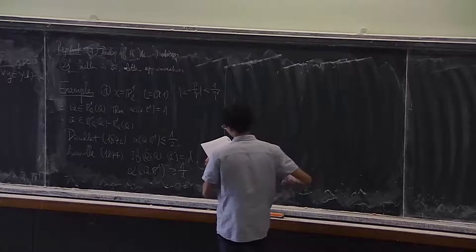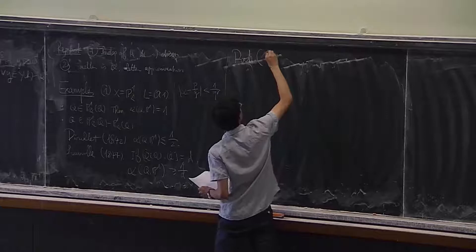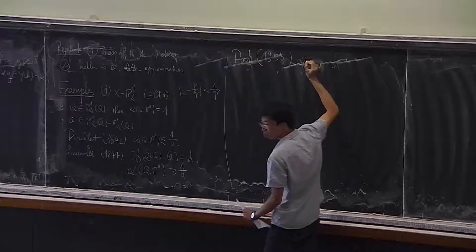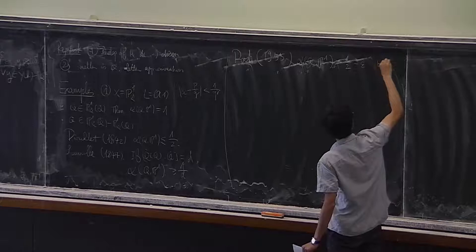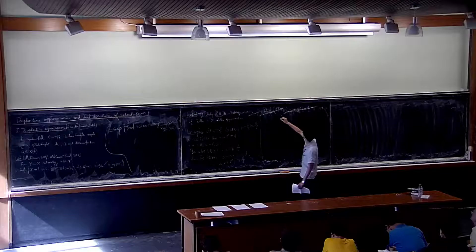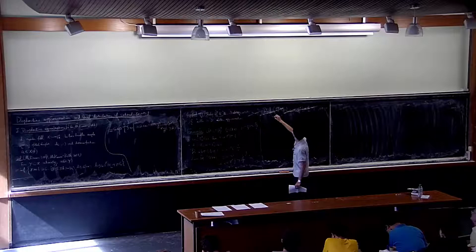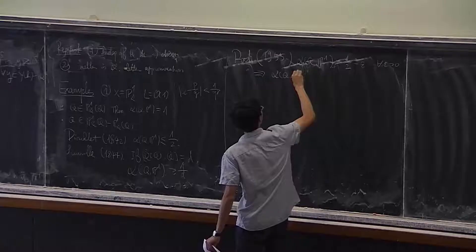Finally, here comes the famous theorem of Roth in 1955, which says that for all algebraic irrational numbers, you cannot do better than 1/2 minus any epsilon. So the conclusion is that the constant for any irrational algebraic number is exactly 1/2.